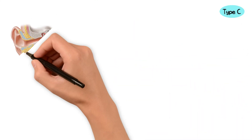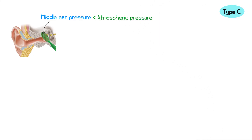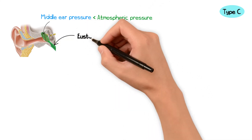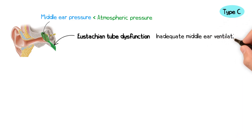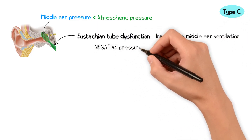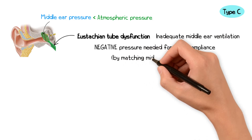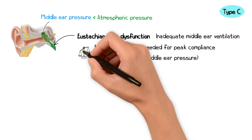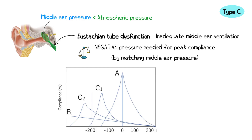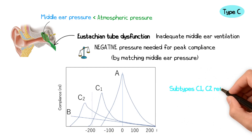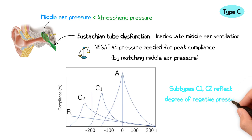A type C trace occurs when the middle ear pressure is lower than atmospheric pressure. This usually results from eustachian tube dysfunction, which prevents adequate ventilation of the middle ear. The tympanic membrane only achieves its peak compliance when the probe applies negative pressure to match the middle ear pressure. Depending on where the peak occurs, type C traces are subdivided into C1 and C2, reflecting varying degrees of negative pressure.